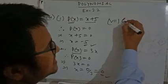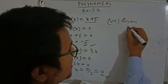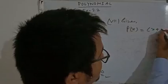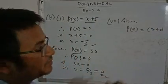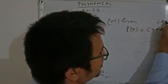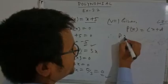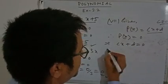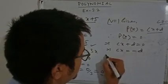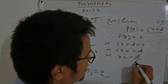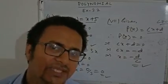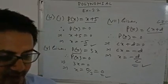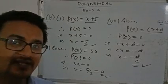Question number 7: given P(X) equals CX plus D, where C is not equal to 0. Set P(X) equals 0: CX plus D equals 0, so CX equals minus D, giving X equals minus D by C. This is the answer. In this way you can solve this type of question. Thank you very much, and the remaining questions from Exercise 2.2 are homework.